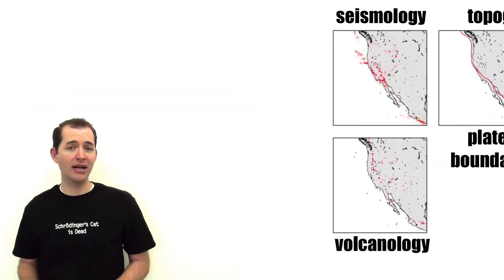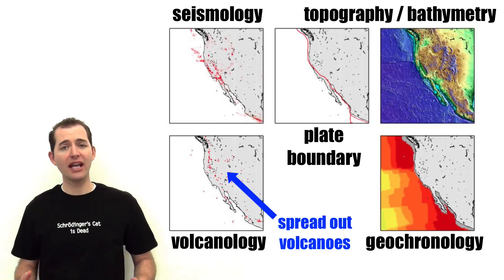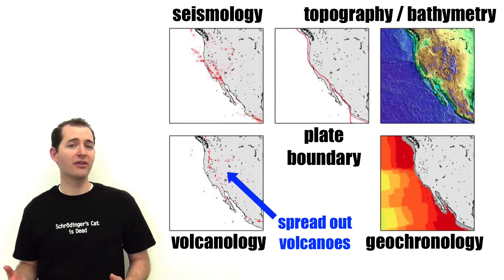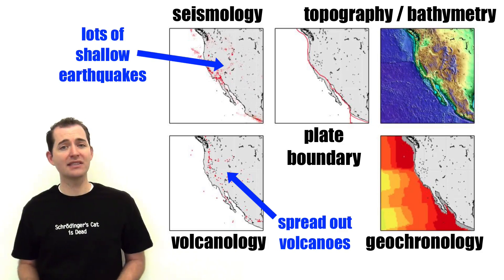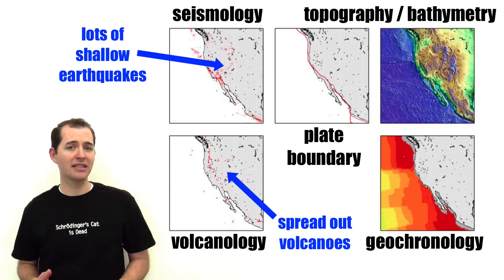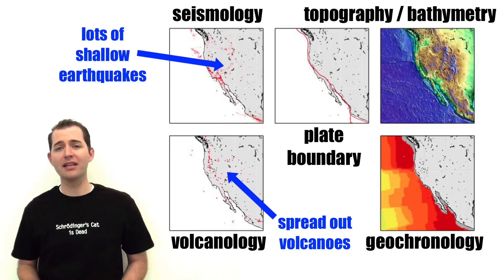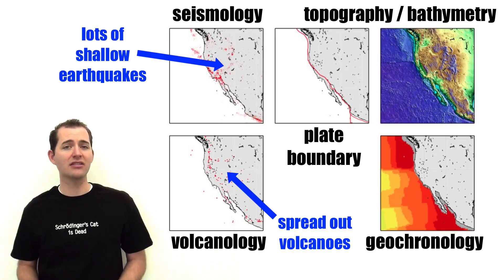However, transform boundaries are characterized by having volcanoes that are spread out over a large area. They are also known for having lots of seismic activity, but most of the seismic activity is from a shallow depth. All of the other features — geochronology, topography, and bathymetry — have very few distinguishing features on transform boundaries.